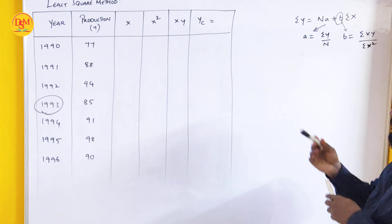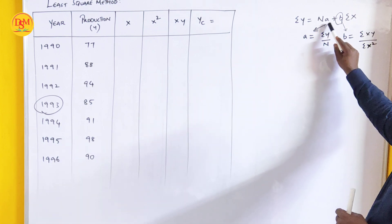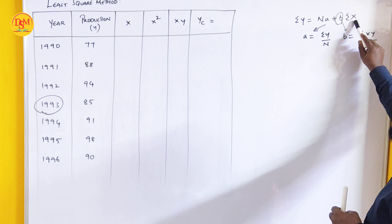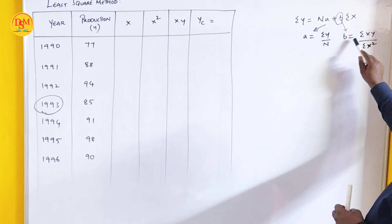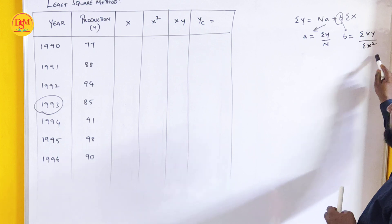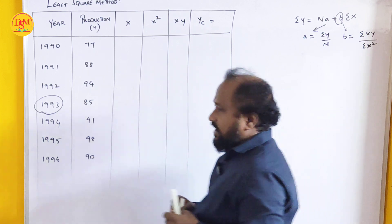The trend of a particular year is equal to NA plus B of sigma X. Here A is equal to sigma Y by N and B is equal to sigma XY by sigma X square.